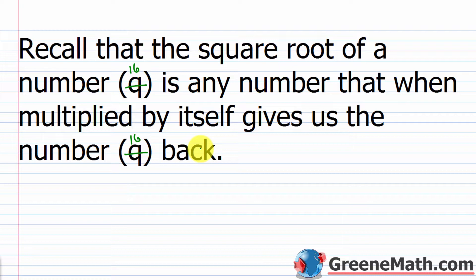We know that 16 is 2 to the fourth power: 2 times 2 is 4, 4 times 2 is 8, and 8 times 2 is 16. We already know 16 is 4 times 4, but we might forget that negative 4 times negative 4 is also 16. That's where this definition comes in — it says 'any number,' so it could be more than one. So the square root of 16 would be 4, but also negative 4.